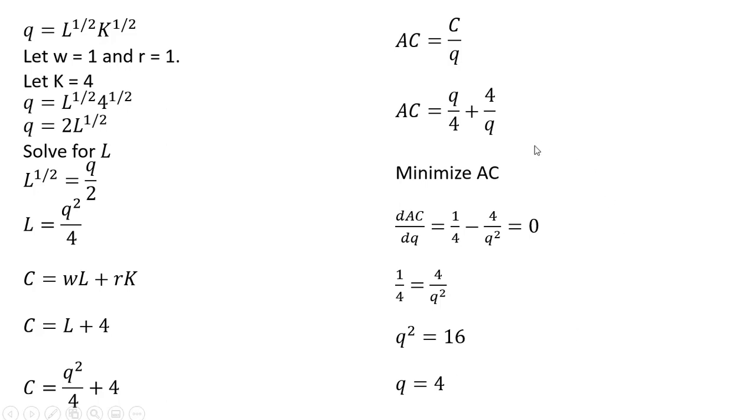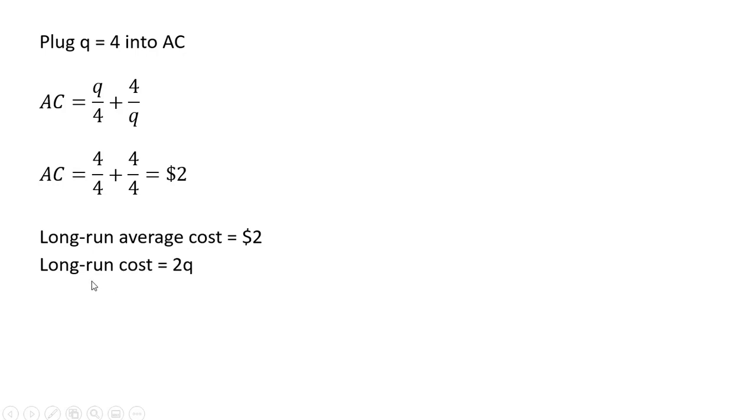We're going to take this Q equals 4 and plug it back into the average cost equation. Doing that over here. So where Q is 4, average cost is $2. So long-run average cost will also be $2.